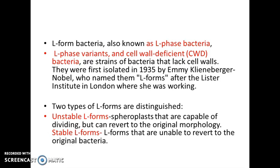L forms were first isolated in 1935 by Emmy Kleinberger Nobel, who named the L forms after the Lister Institute in London where she was working. Two types of L forms are distinguished. First, unstable L forms, which are spheroplasts that are capable of dividing but can revert to their original morphology.